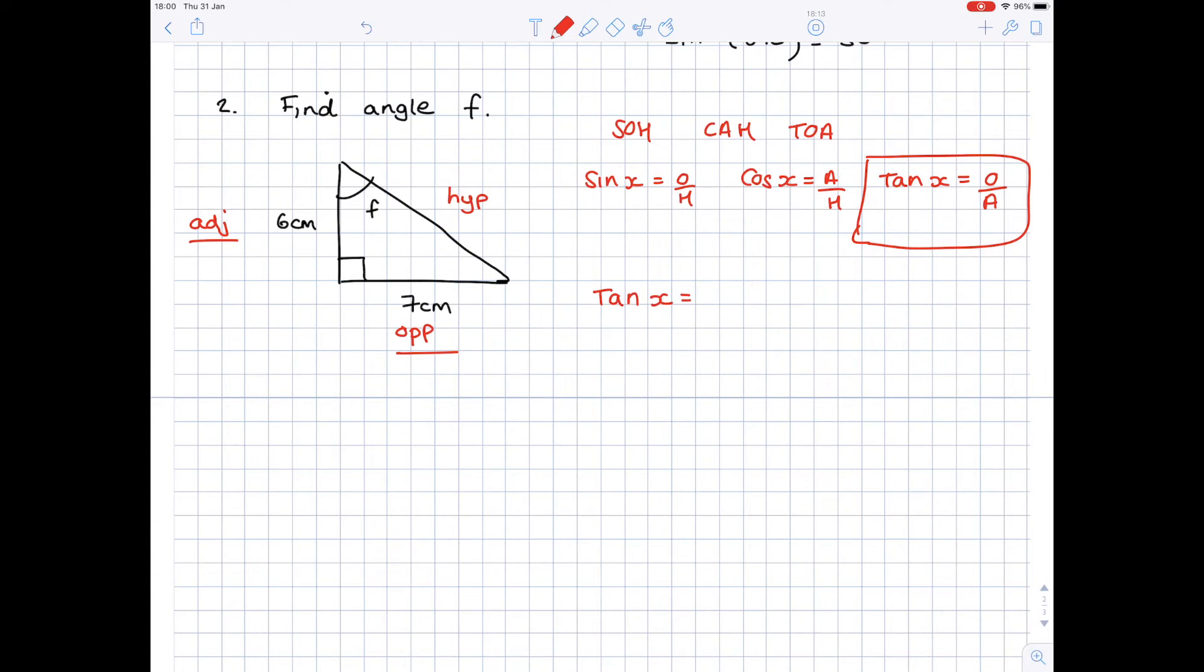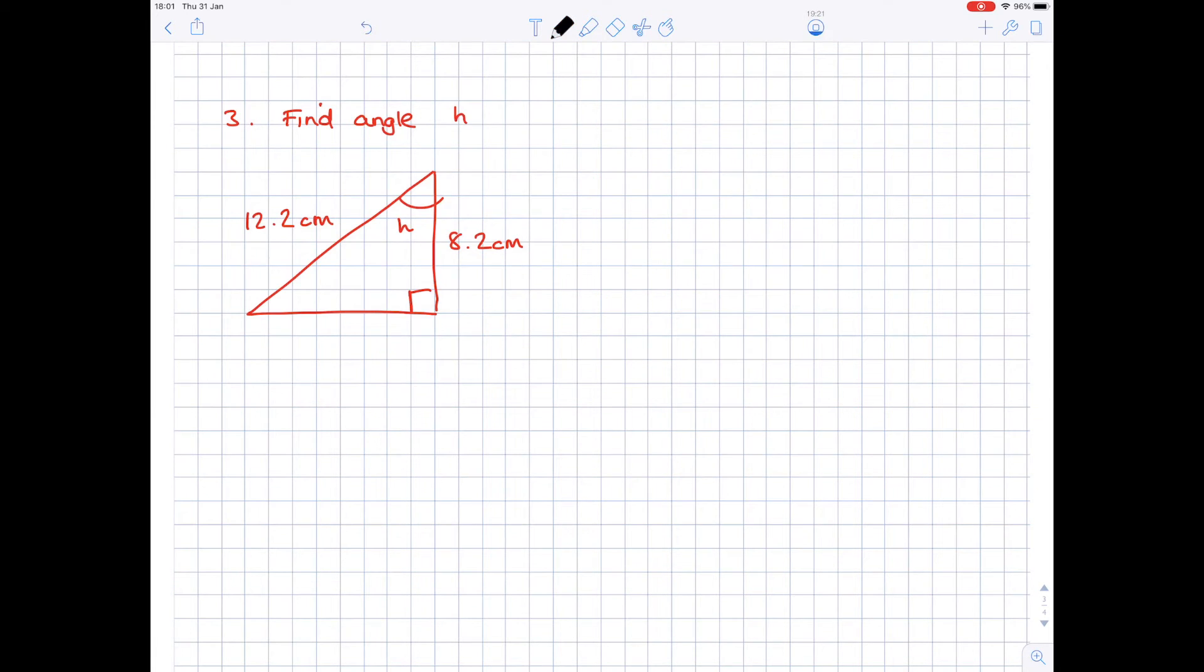Tan x is the angle we're looking for. O is seven, adjacent A is six. Pop seven divided by six into your calculator to get tan x equals 1.16 recurring. Then the way in which you find x is by doing an inverse tan on 1.16, and you'll get an angle which is 49.4 degrees to 3 sig fig. Try and make sure that it's a sensible number because if it looks silly it means it's probably wrong.